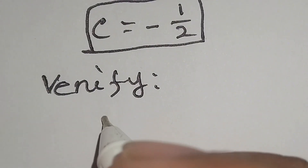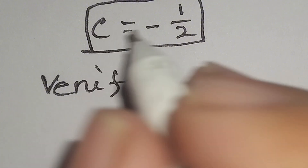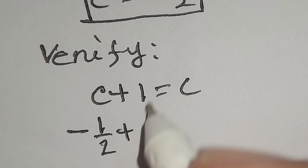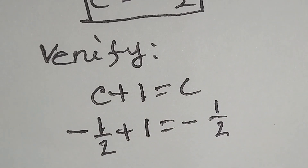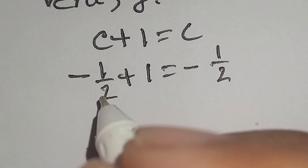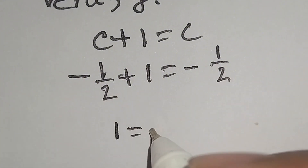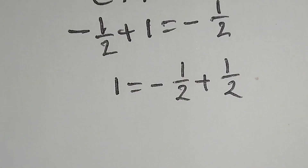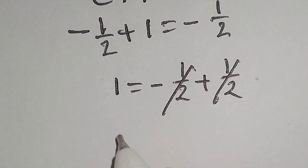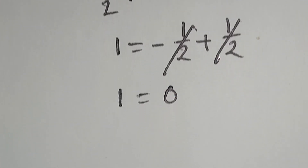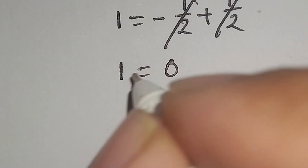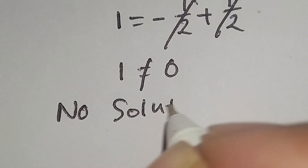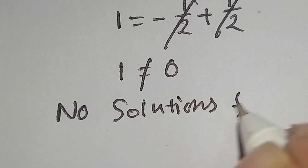Our main equation is c plus one equals square root of c. Here c equals minus one over two, so we can write: minus one over two plus one equals square root of minus one over two. Moving minus one over two to the right side gives us: one equals minus one over two plus one over two. The minus one over two cancels with the plus one over two, so one equals zero. But one cannot equal zero. So there is no solution for c.